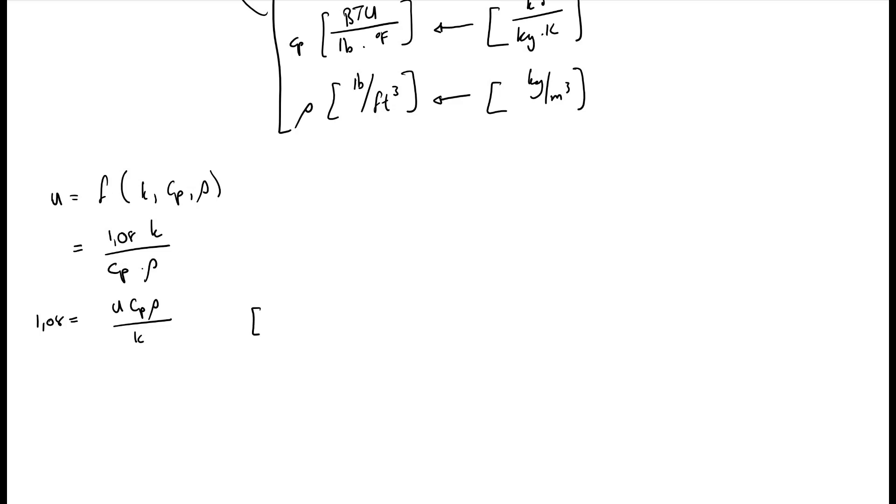And the units for the constant. So let's start. Velocity is foot per second. cp we have as btu over pound degrees Fahrenheit. Density we have as pound per cubic foot. And k we have as btu over foot hours degree Fahrenheit. And I write it 1 over because it is divided by my equation.